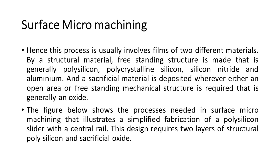Hence this process usually involves films of two different materials. By a structural material, a free-standing structure is made — that is generally polysilicon, polycrystalline silicon, silicon nitride, and aluminium. And a sacrificial material is deposited wherever either an open area or free-standing mechanical structure is required — that is generally an oxide.